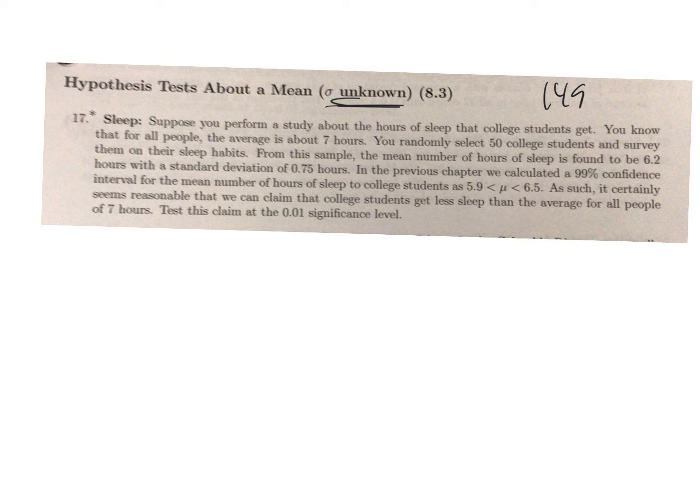Let me get a highlighter going so we start doing some highlighting. Let's see, suppose you want to know that for all people the average amount of sleep is seven hours. We randomly select 50 college students, so n equals 50.